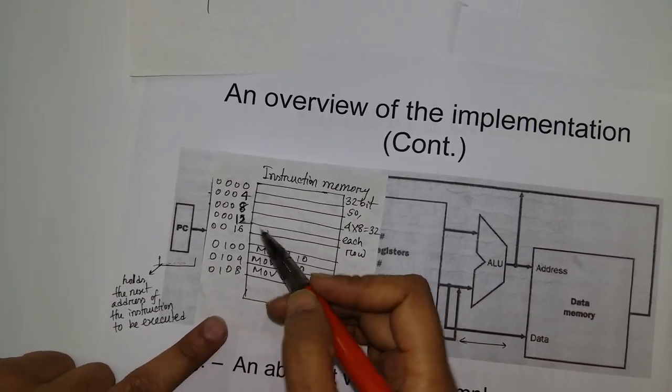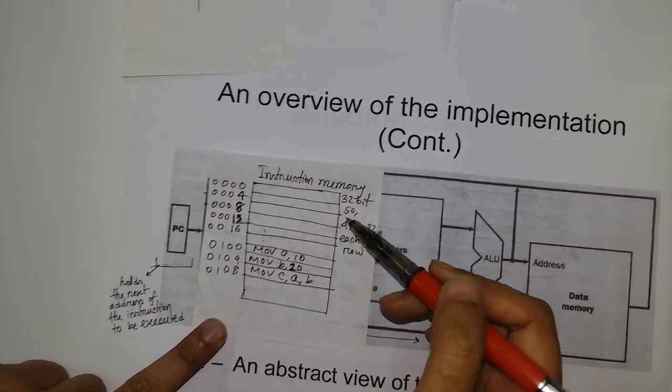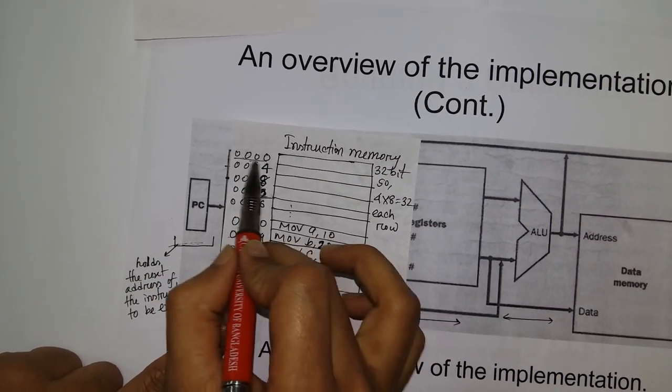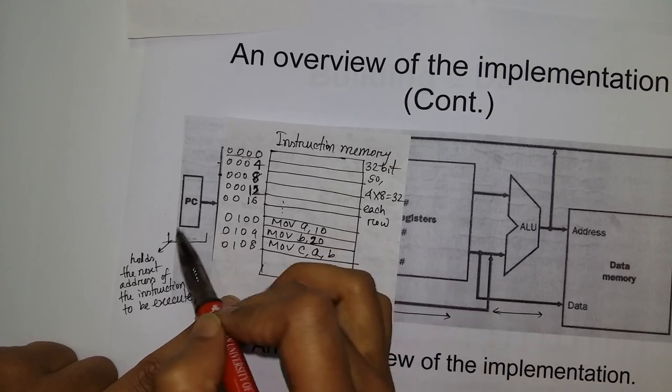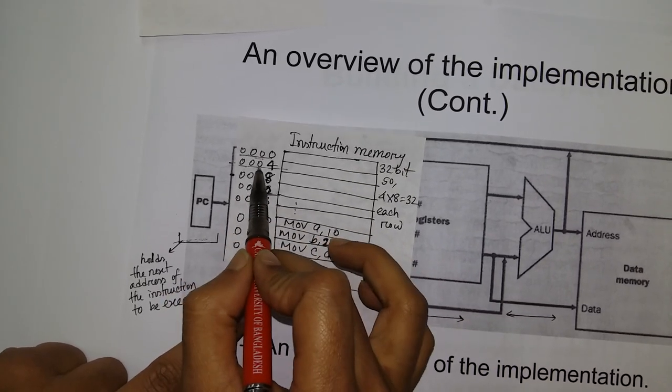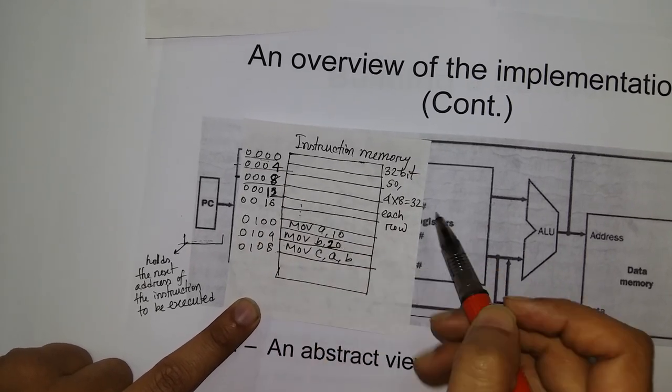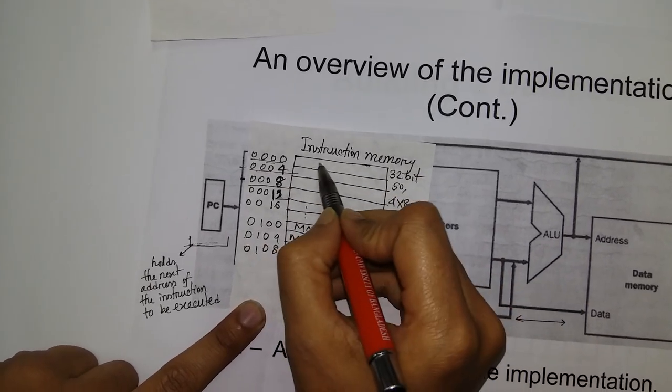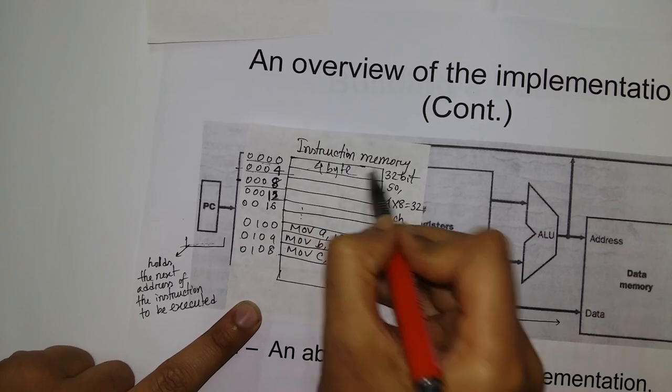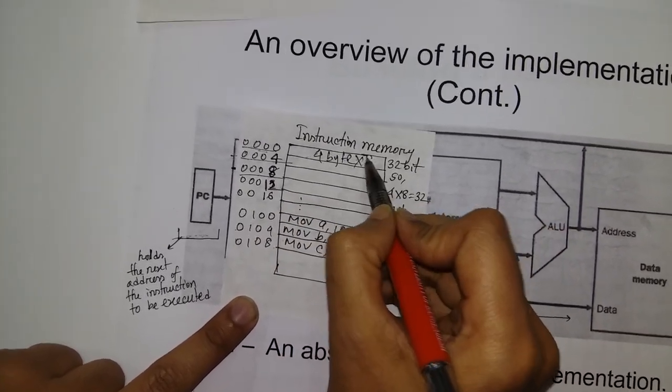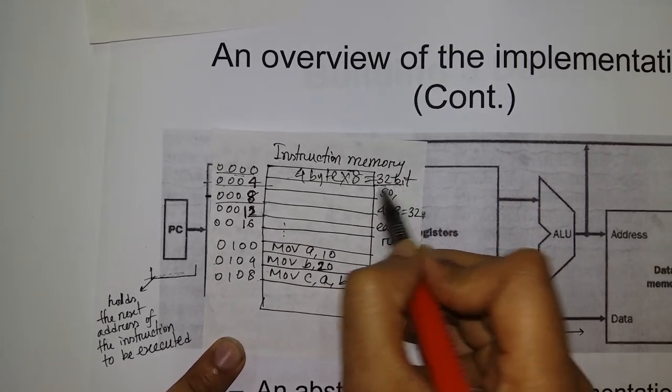The corresponding memory instructions are stored in RAM or memory. The memory is byte addressable. The first address is 0000, then the next address is 0004, then 0008. The interval is 4 bytes, so each row is 4 bytes times 8 bits, which equals 32 bits.